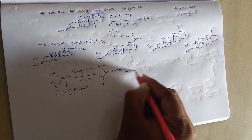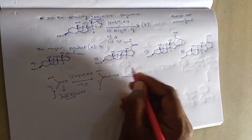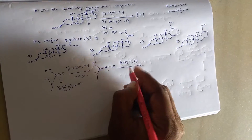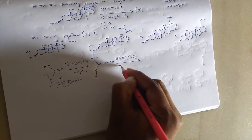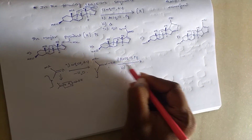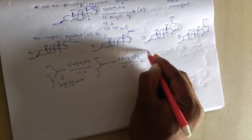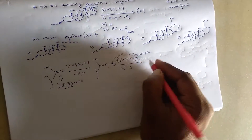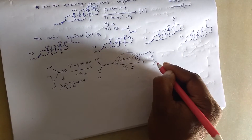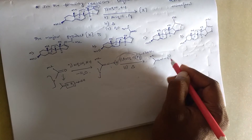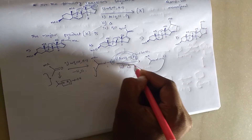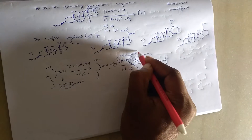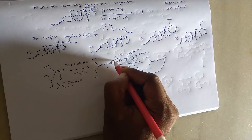In the second step, this reacts with aromatic sulfonyl chloride in the presence of pyridine. Pyridine is a base, so it abstracts the proton from the hydroxylamine nitrogen. Then we get a negative charge, and this oxygen ion reacts with aromatic sulfonyl chloride by the removal of chloride ion Cl⁻.